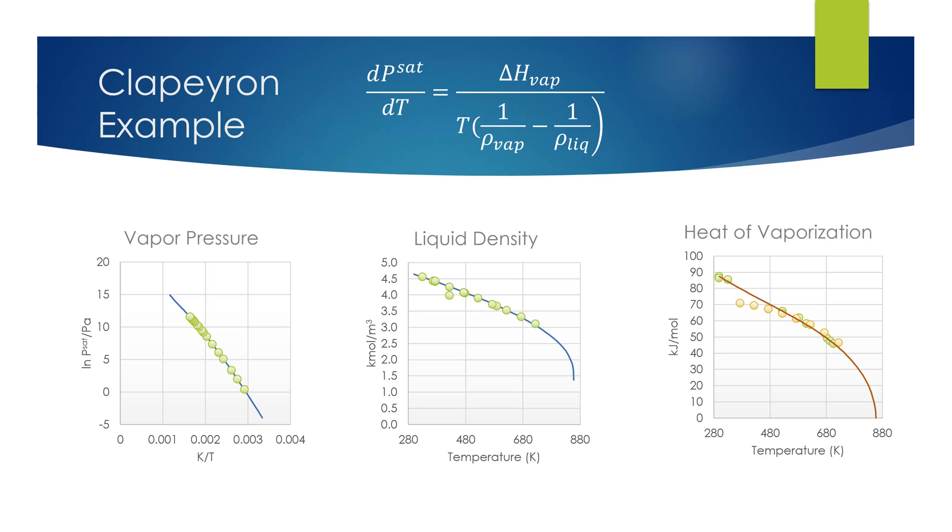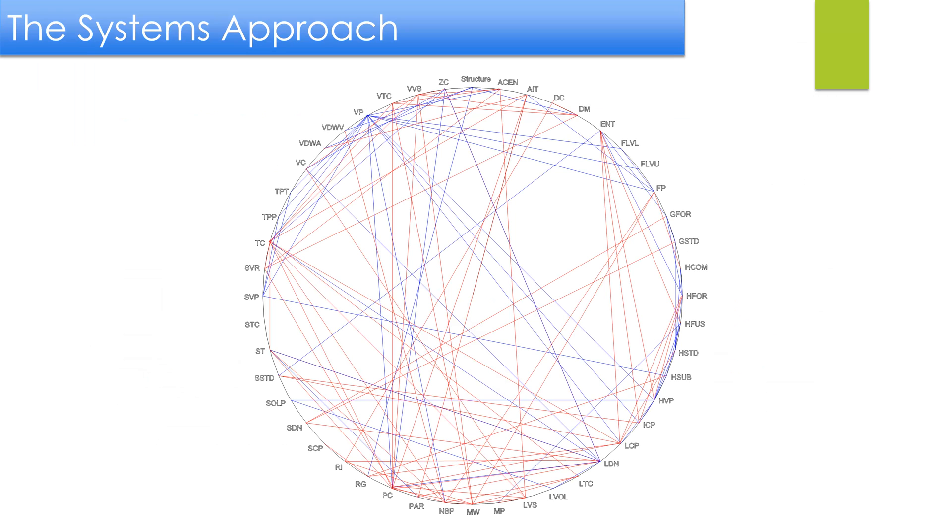What makes the DIPR evaluation process unique and valuable is the depth at which the evaluation process takes place. This diagram helps explain just how extensive the DIPR evaluation process is. Depicted on the outside of the circle are the 32 constant properties and 15 temperature-dependent properties found in the database.